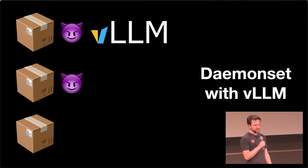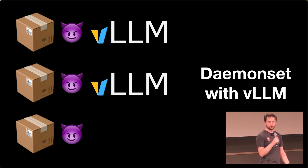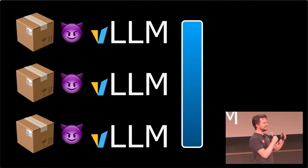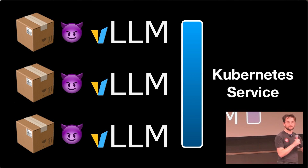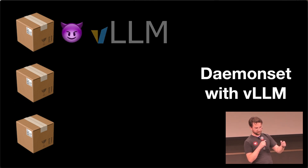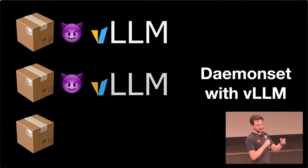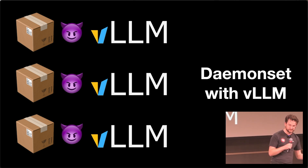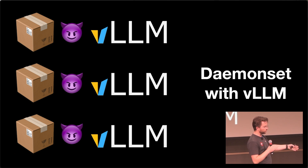We use something called VLLM. A daemon set in Kubernetes is basically just a way to enable a pod or some software to run on every single one of those nodes. So every single one of these gets a VLLM piece of software that can then do inference — inference being the text generation for whatever we're sending with it.